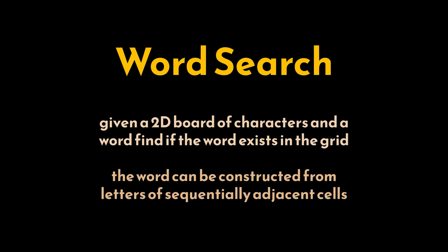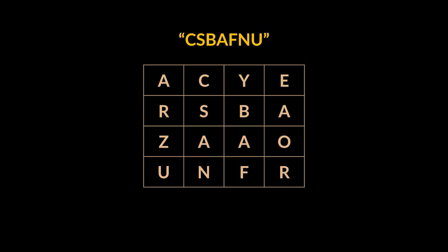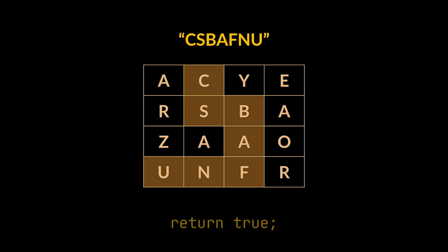The word can be constructed from letters of sequentially adjacent cells, adjacent cells being those horizontally or vertically neighboring. The same cell may not be used more than once. To visualize this, take this grid of characters as an example alongside the word in front of us. We can clearly see that this word exists in the grid, hence the result returned by our logic should be true.